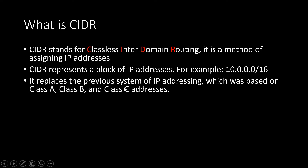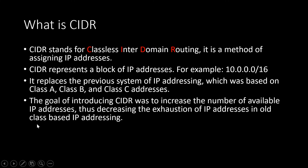CIDR replaces the previous system of IP addressing which was based on Class A, Class B, and Class C addresses. The goal of introducing CIDR was to increase the number of available IP addresses, thus decreasing the exhaustion of IP addresses. In old class-based IP addressing, there was an issue that the number of IP addresses were exhausted.